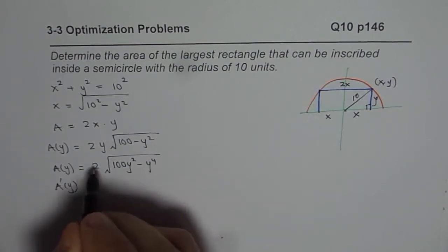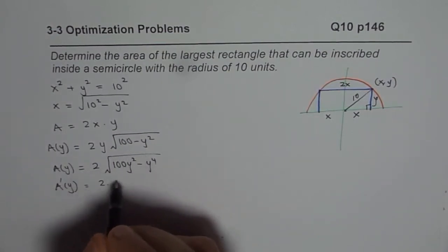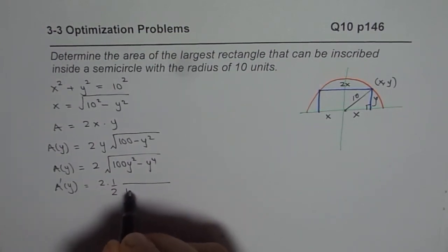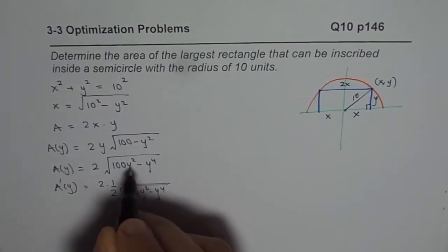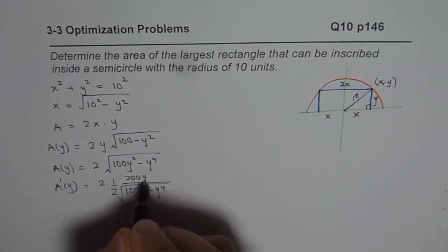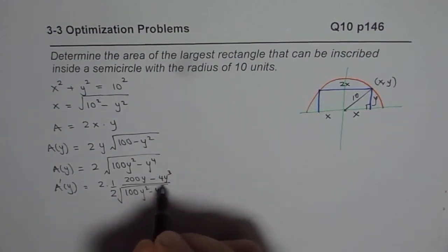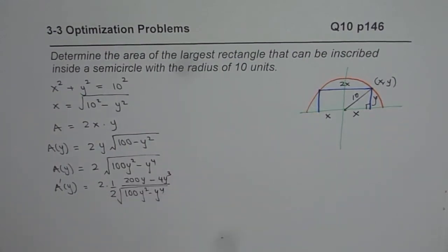And now we have this area in terms of y. We can find its derivative. So the derivative of this function is 2 times half of all this to the power of minus half, which is 100y squared minus y to the power of 4, square root times derivative of the inside function. So the inside function will be 200y minus 4y to the power of 3. So that is how it is going to be.